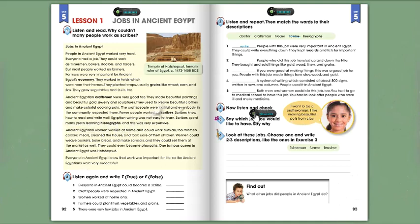People with this job were very important in Ancient Egypt. They could write everything down. They kept records and lists for many important things. Two, Trader: People who did this job traveled up and down the Nile. They bought and sold things like gold, wood, linen, and grains.